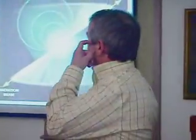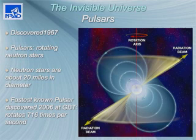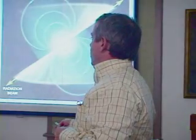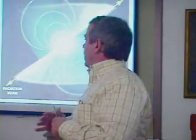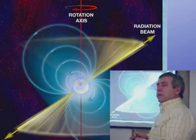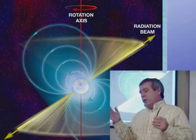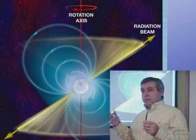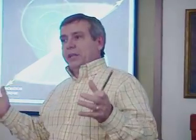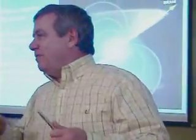We also see objects in the radio that are either not visible or difficult to see in other parts of the spectrum, such as pulsars. Pulsars are rotating neutron stars — one of the endpoints of stellar evolution, where a star collapses at the end of its life into a city-sized object about 20 miles in diameter, enormously dense. A large number of them emit pencil-like beams of radiation. These objects rotate very, very fast — anywhere from a few times per second up to 1,000 times per second. Imagine Charlottesville rotating 800 times per second.